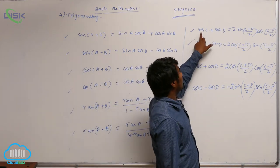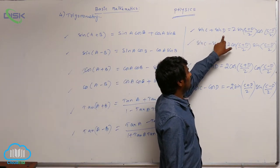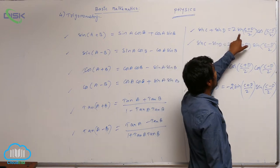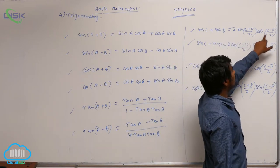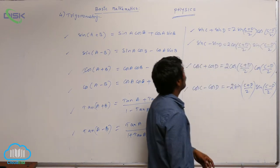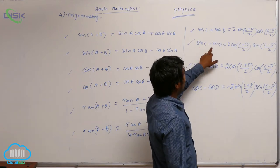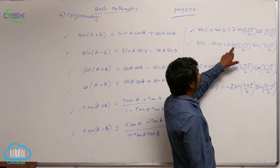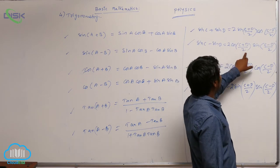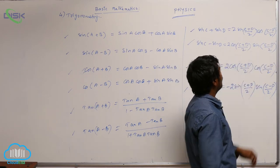And sin c + sin d = 2 sin((c + d)/2) cos((c - d)/2). sin c - sin d = 2 cos((c + d)/2) sin((c - d)/2).